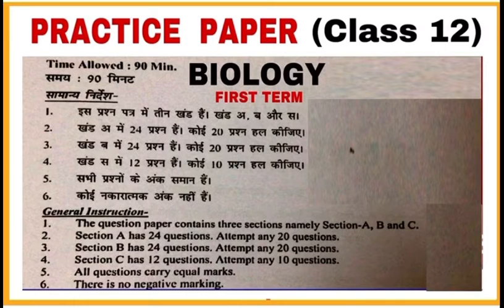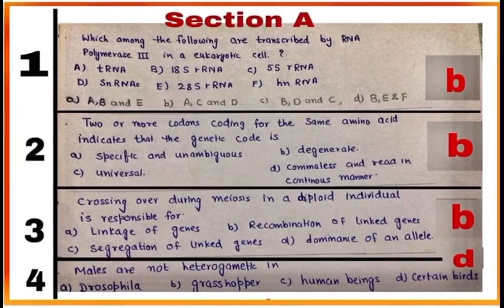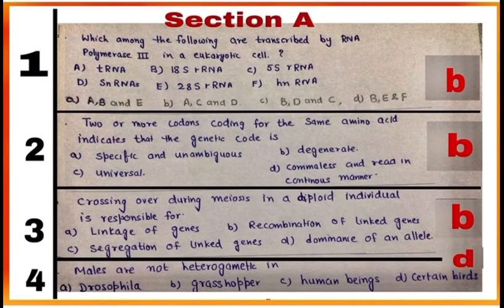As per instructions given from Section A, attempt 20 questions out of 24 questions. These are question number 1 to question number 4. Some important points to remember to score good: learn all highlighted terms given in your book.